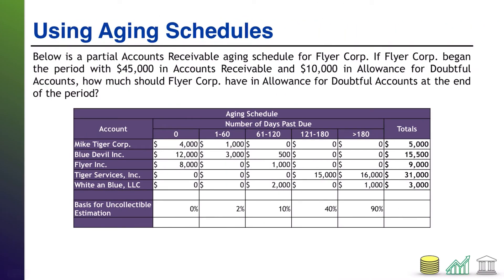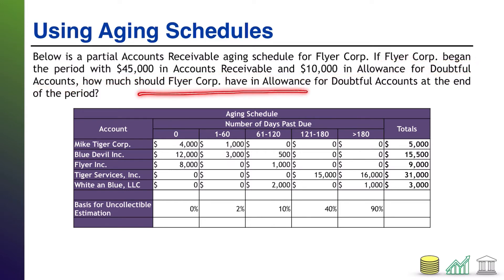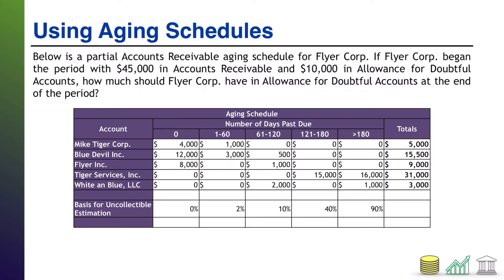Here comes the next one. Below is a partial accounts receivable aging schedule for Flyer Corps. If Flyer Corps began the period with $45,000 in accounts receivable and $10,000 in allowance for doubtful accounts, how much should Flyer Corps have in allowance for doubtful accounts at the end of the period? There are a couple of key areas that are blank on the aging schedule — see if you can answer this question on your own. When you're ready, come on back and I'll walk through the solution.